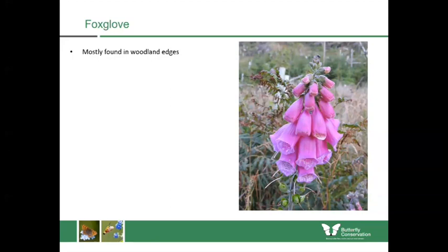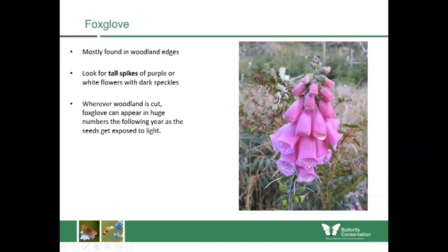The foxglove — which many people know — is mostly found in woodland edges. Look for tall spikes of purple, pink or white flowers with dark speckles. You often see them wherever woodland has been cut — it might have been a really dark woodland for years, but the following year after thinning, foxgloves come up in huge profusion because the sunlight finally reaches their seeds, sometimes for the first time.